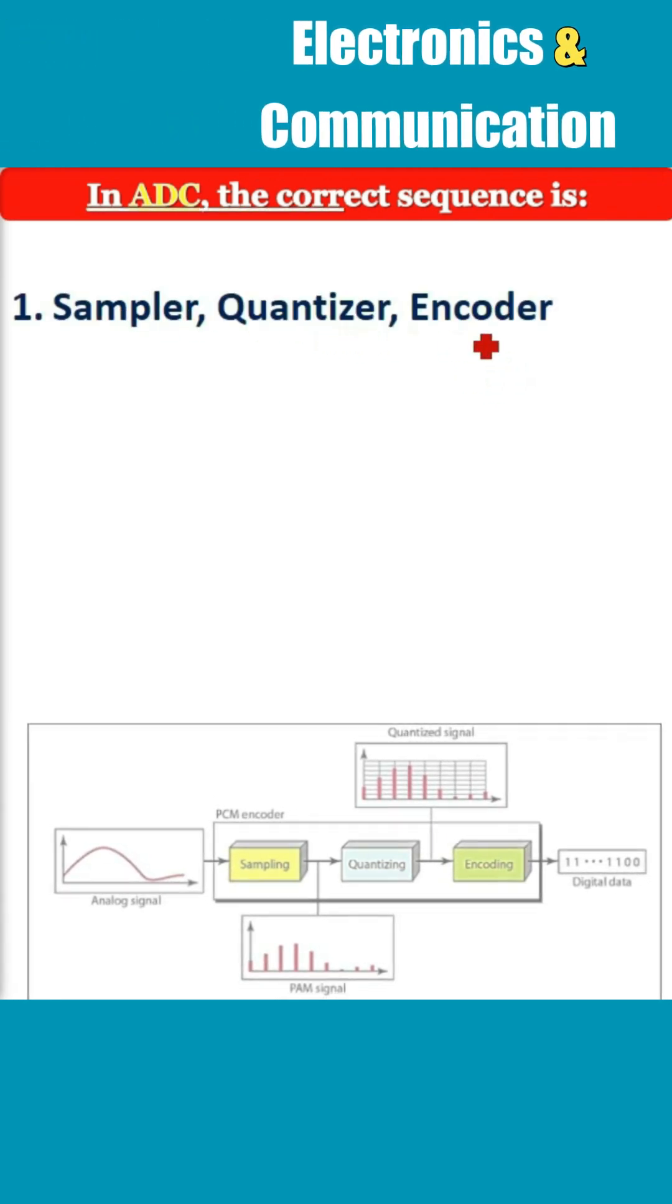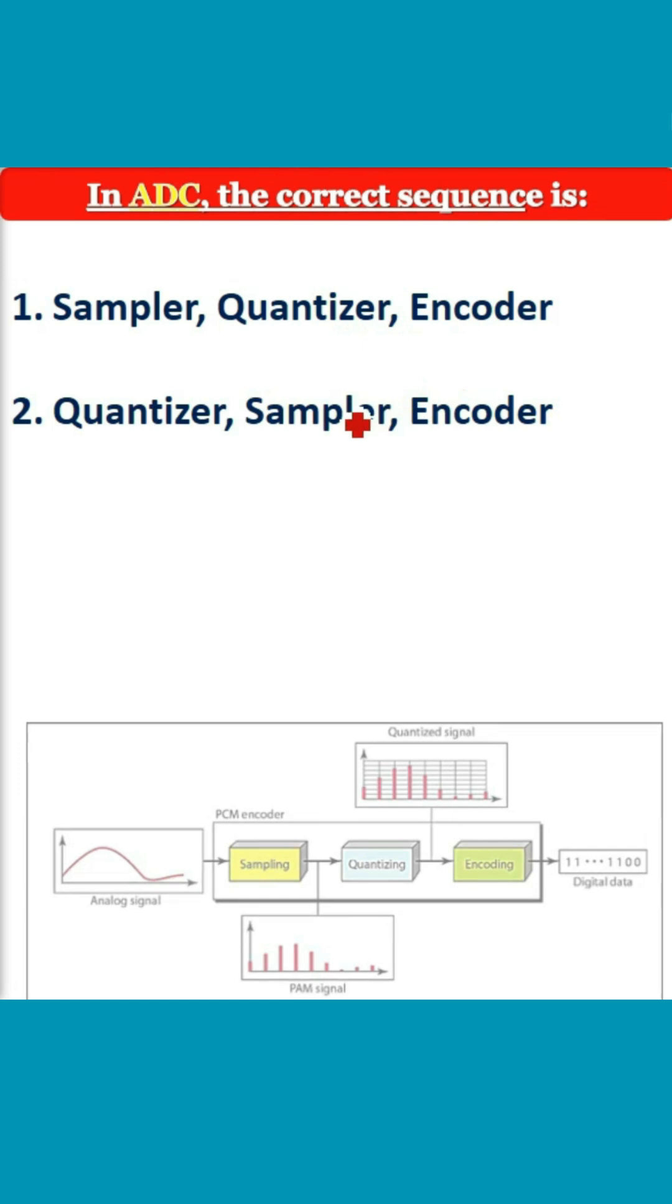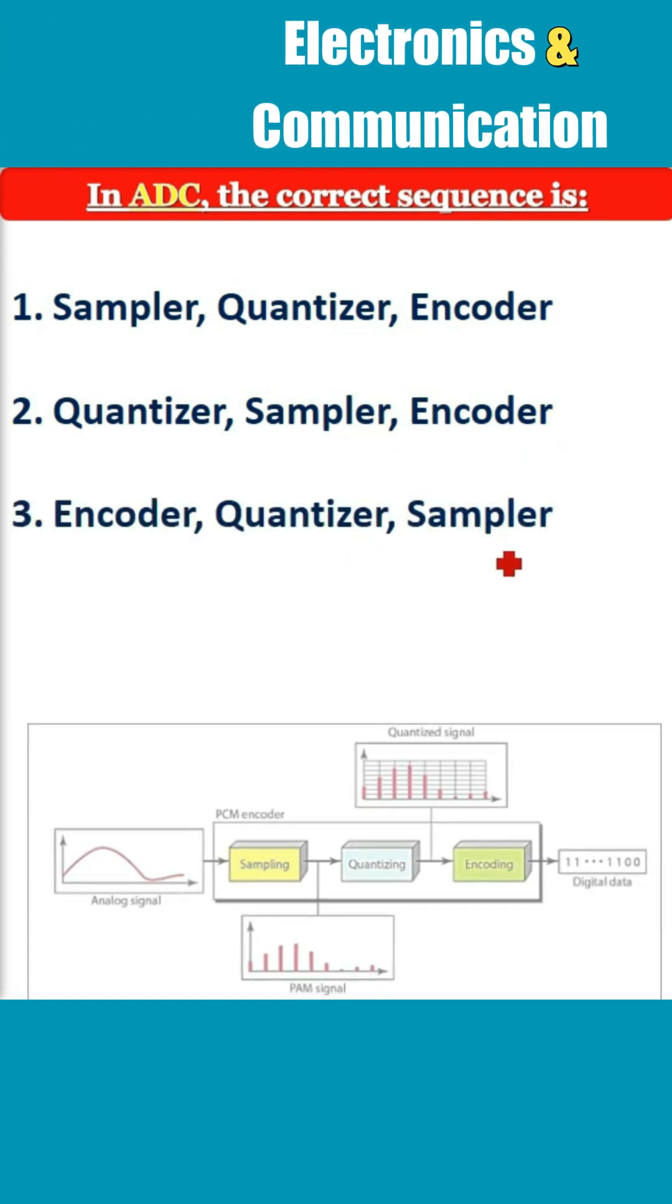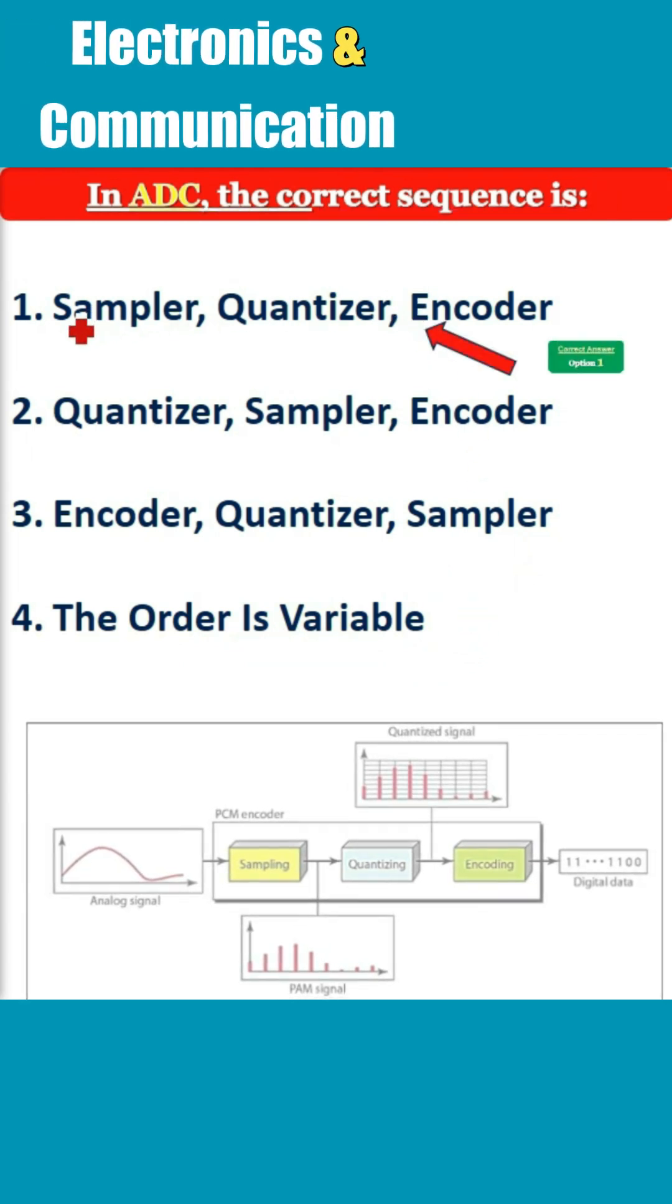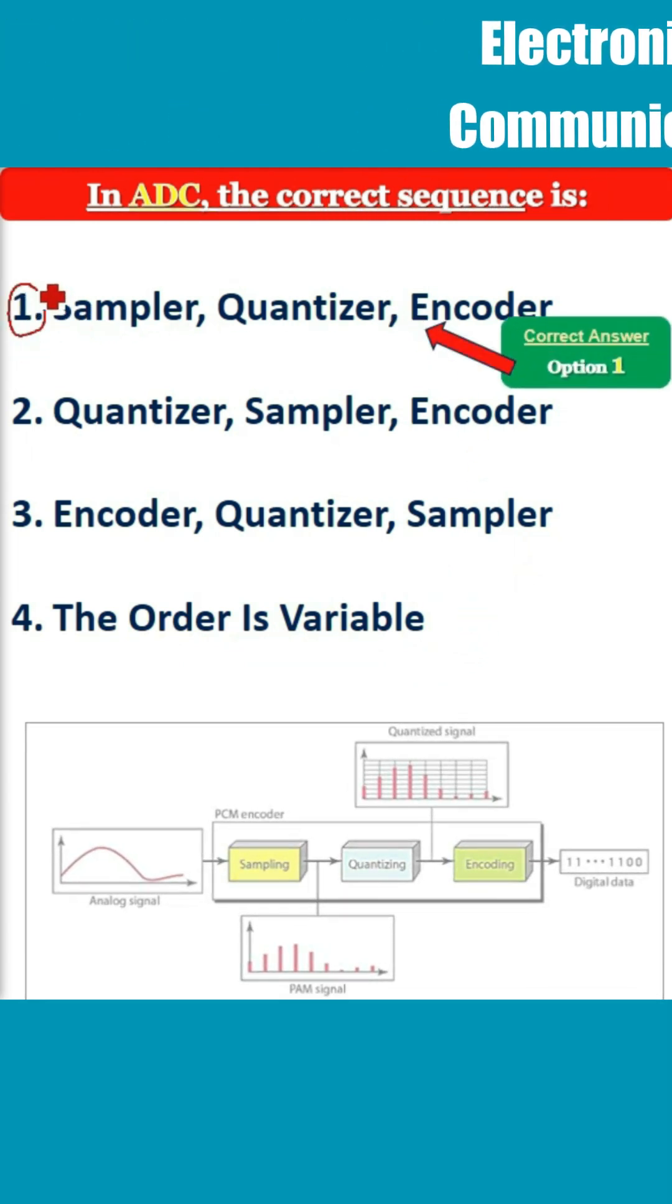Options are sampler quantizer encoder, quantizer sampler encoder, encoder quantizer sampler, and the order is variable. So the correct option is the first option: sampler, quantizer, and encoder.